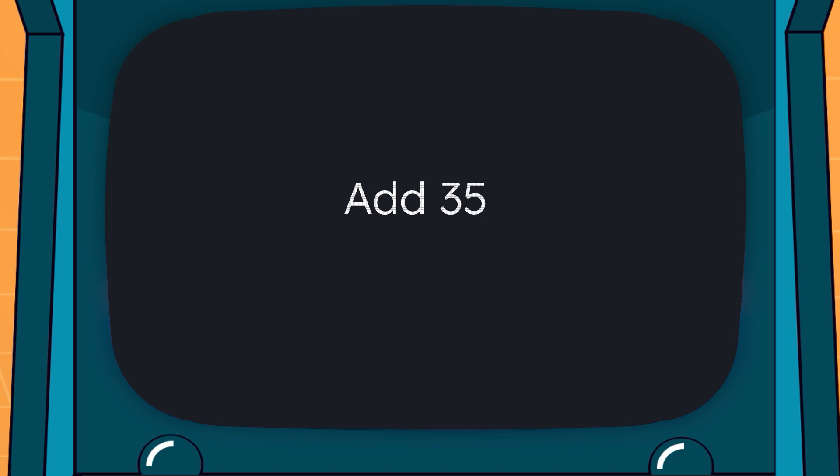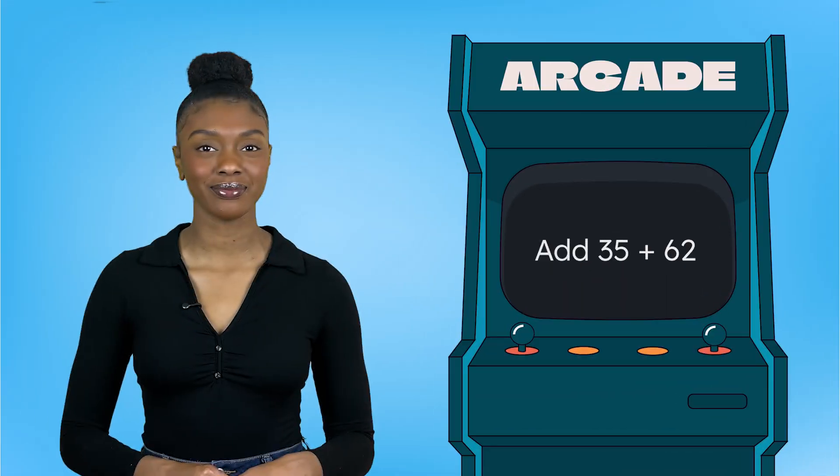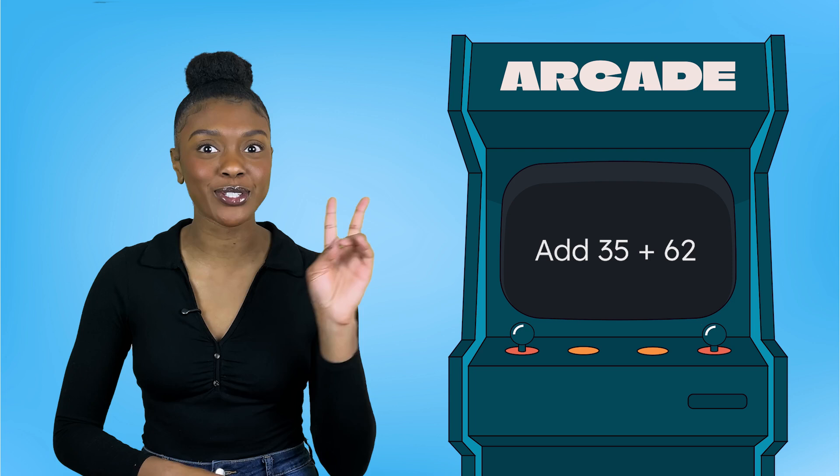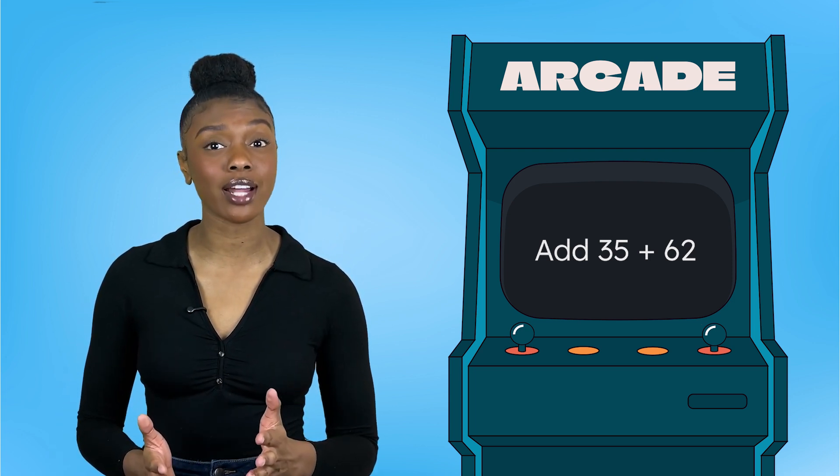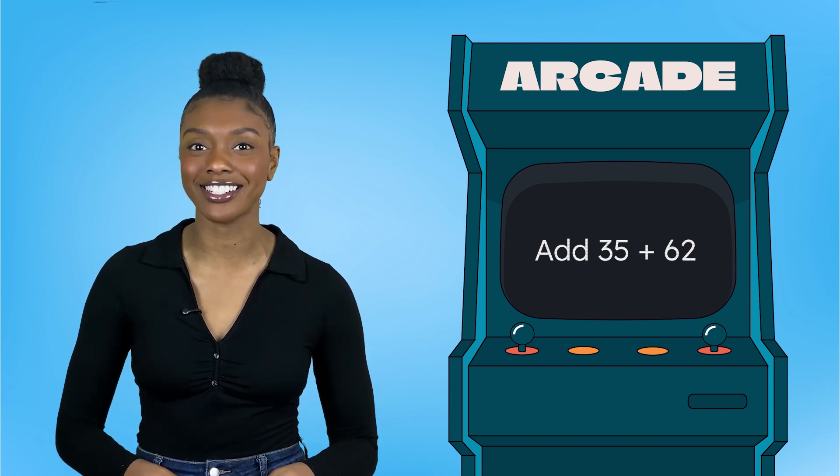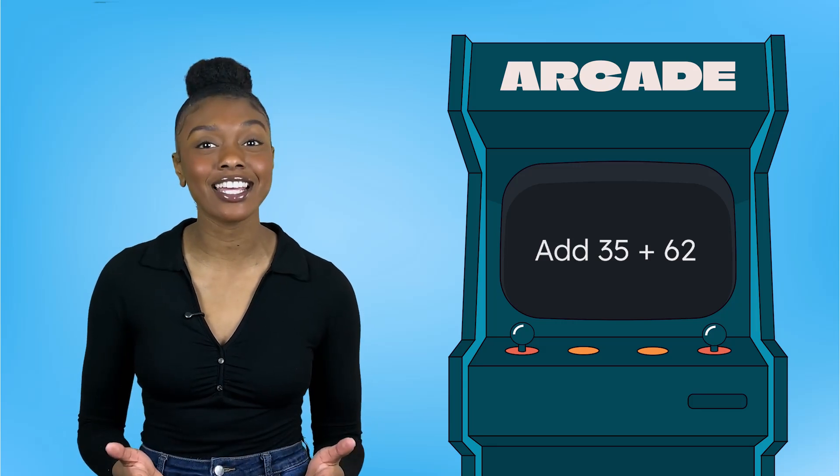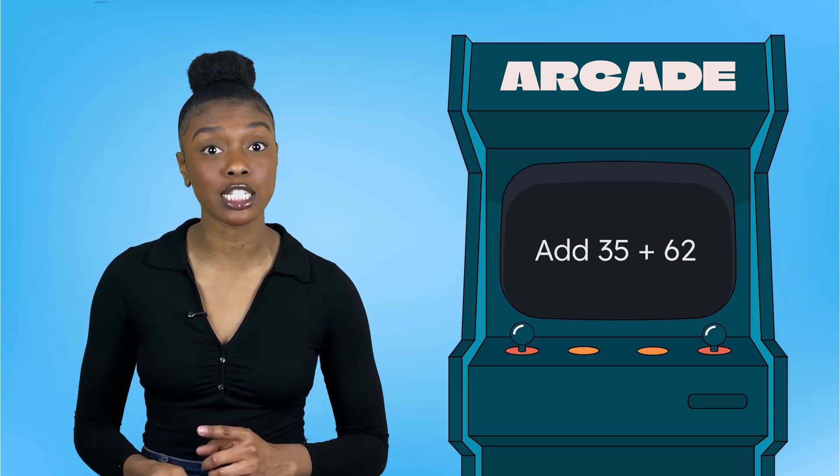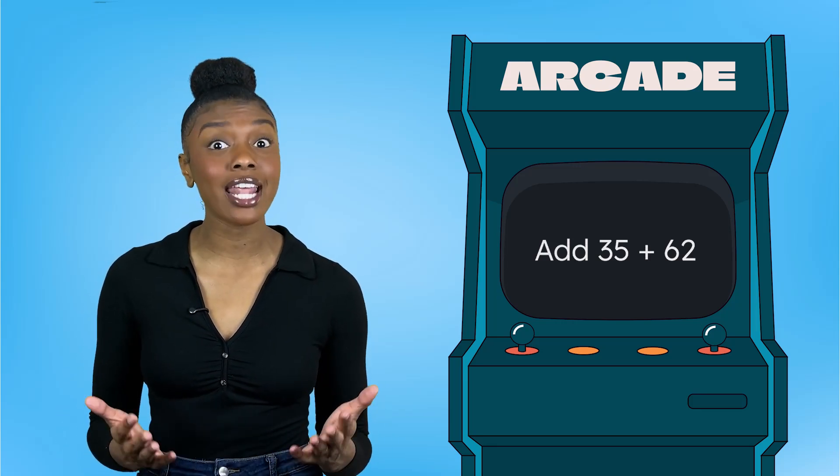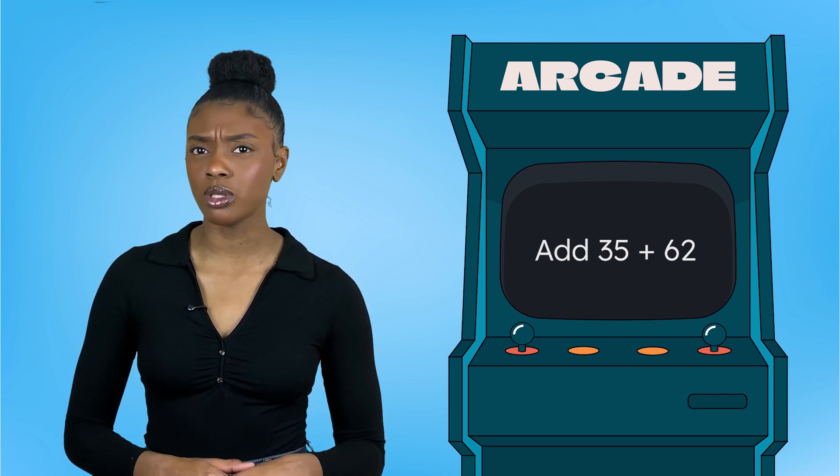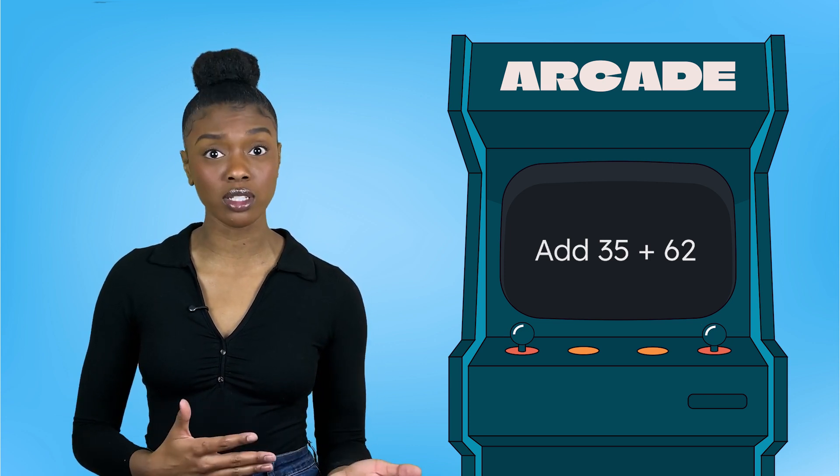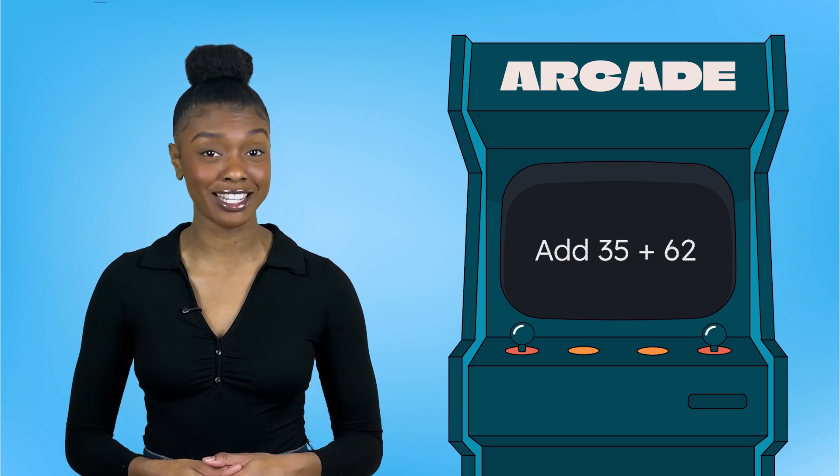Add 35 plus 62. Welcome to level 2. In this level, we will practice adding and subtracting numbers while learning some new strategies. Our quest today is to add 35 plus 62. We've added and subtracted two-digit numbers like this before. Could we use our place value skills from level 1 to help us solve this? Let's give it a try.